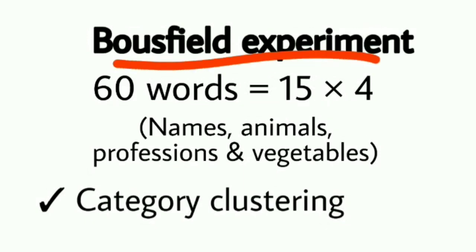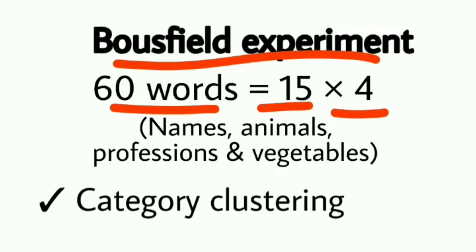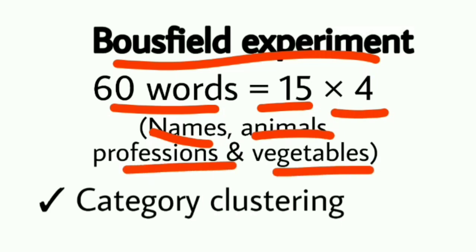Phir aata hai Bousefield experiment. Is experiment mein free recall hoti hai — zaroori nahi ki jis order mein words diye hain usi order mein yaad karein. Is experiment mein 60 words ki list participants ko provide ki jaati hai aur ye words chaar categories mein divide hote hain — 15 words har ek category mein. Jaise ek category hai names ki, ek animals ki, ek professions ki, aur ek vegetables ki.